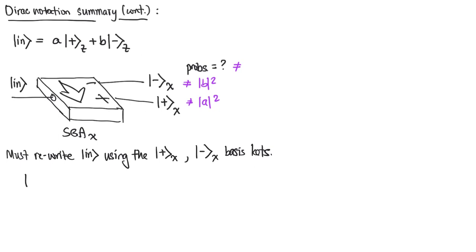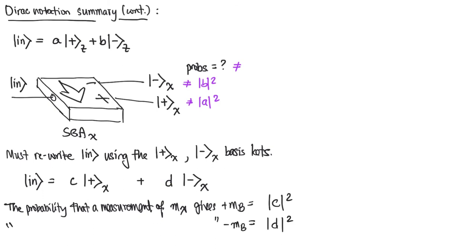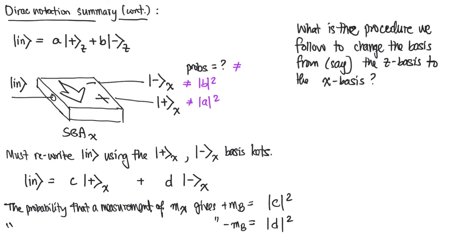Rewriting in the x basis would look something like this: the input equals some linear combination of plus-x and minus-x with coefficients out front. Those coefficients are not going to be a and b, so we'll call them c and d. In that case, we can directly read off that the probability of a measurement of mx giving plus is |c|², and the probability of mx giving minus is |d|². The question is: if we knew a and b, how do we compute c and d? In other words, if you know how to write the state in one basis, how do you change the basis? That is something we will work out in a future video.